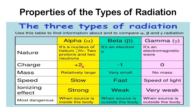Looking at their charges: the charge of an alpha particle is positive two, the charge of a beta particle is negative one, while gamma radiation has no charge. Looking at their masses: alpha particle has a relatively large mass, beta particle being an electron has a very small mass, while gamma has no mass at all. In terms of speed: alpha is slow due to its large mass, beta is fast, and gamma moves at the speed of light.